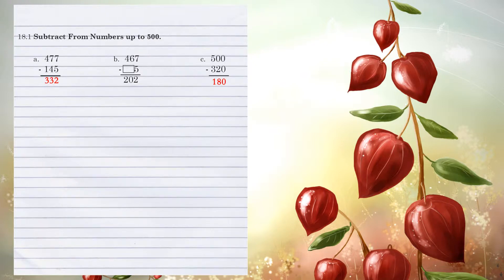Let's look at Example B. We have some missing numbers that we need to fill in. In the 1's column, 7 minus 5 does equal 2. In the 10's column, 6 minus what number would equal 0? We can take 6 away and it equals 0. And 4 minus what number equals 2? We can subtract 2 to fill in the rest of our missing numbers.